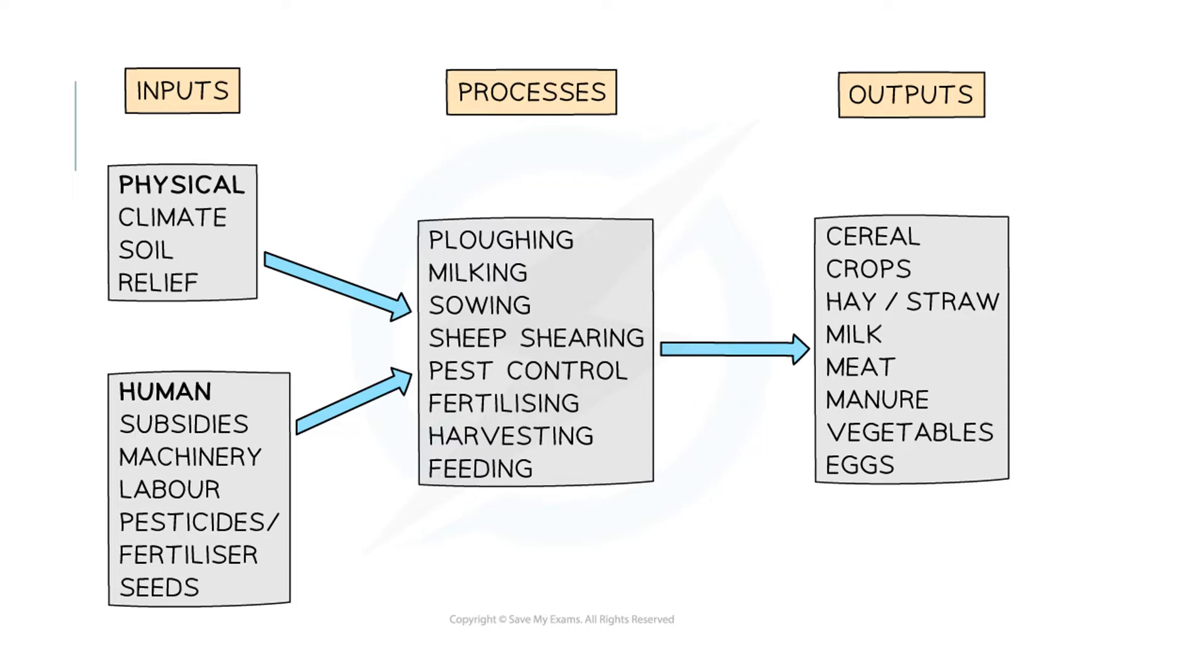When it comes to food production this systems diagram from the Save My Exams website highlights exactly what you need to know. You need to be able to for various farming techniques identify the inputs, processes and outputs.